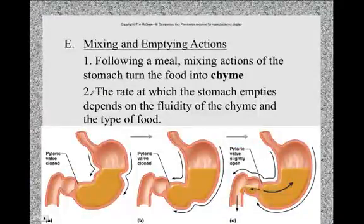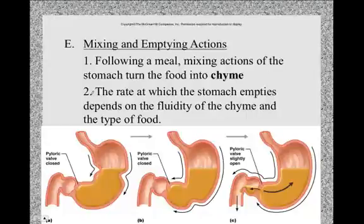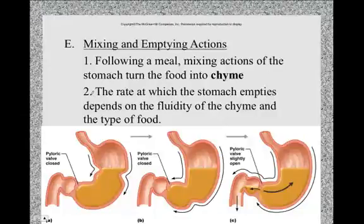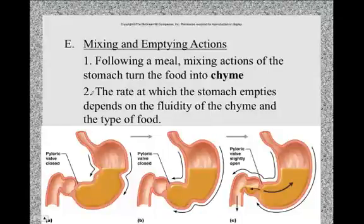The stomach performs a lot of mixing actions through a motion called segmentation, which churns and mixes food with digestive enzymes. Following a meal, these mixing actions turn the food into what we call acid chyme - the stomach mixes the food bolus with hydrochloric acid and digestive enzymes like pepsin, beginning to break down proteins. The acidic substance left over is called acid chyme.